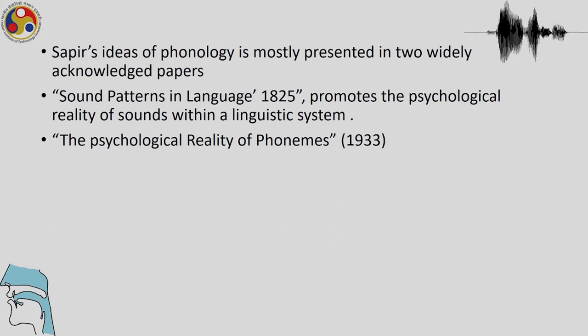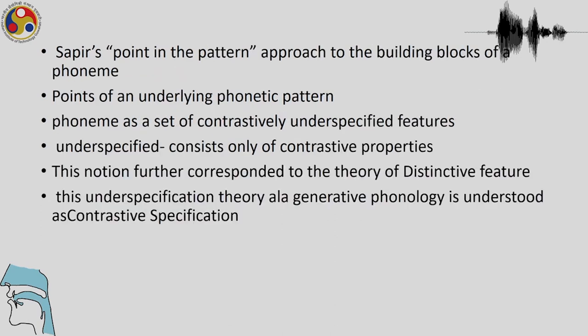In Sapir's pattern approach, the phoneme is a system that posits an underlying phonemic pattern. The phoneme is considered to be a set of contrastively underspecified features; in this underspecified system, what constitutes the phoneme is merely the contrastive properties. This notion further corresponded to the theory of distinctive features, and this underspecification theory is understood in generative phonology as contrastive specification.